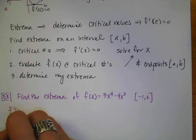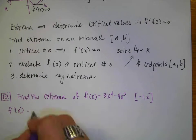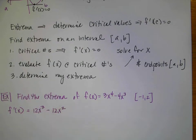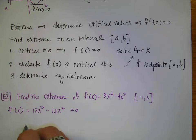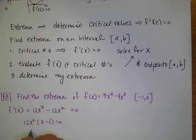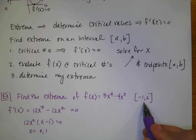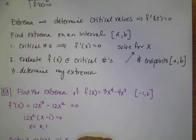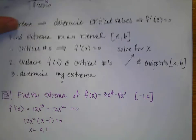The first thing I have to do is find the derivative of my function. Using the simple power rule, I get 12x cubed minus 12x squared, and then I set that equal to zero, because my extrema will happen where I have a horizontal tangent of zero. I factor out 12x squared and get x minus 1 equals zero. So I get x equals 0 and x equals 1. These are my critical values in addition to the endpoints negative 1 and 2. So I list those critical values: negative 1, 0, 1, and 2, in numerical order.